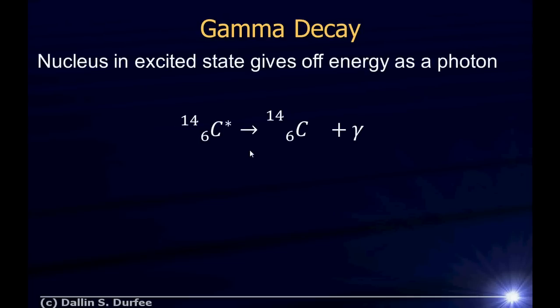Rather than electrons, it's the stuff actually inside the nucleus. Because nuclear binding energies are much higher than electron binding energies, these photons tend to be much shorter wavelength, much more energetic, and they can be very dangerous. So an example: here's a carbon-14 atom, maybe as a result of some nuclear decay. After the decay, it ends up in an excited state — that's what the asterisk means. It can go down to a lower energy state by giving off some of its energy as a photon, and that photon is what we call a gamma ray. A gamma ray is just a photon that comes from a nuclear de-excitation.